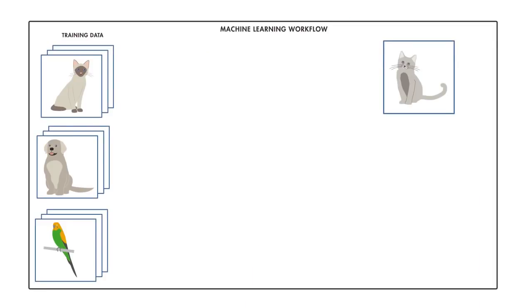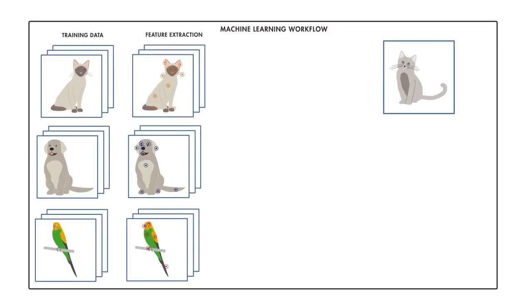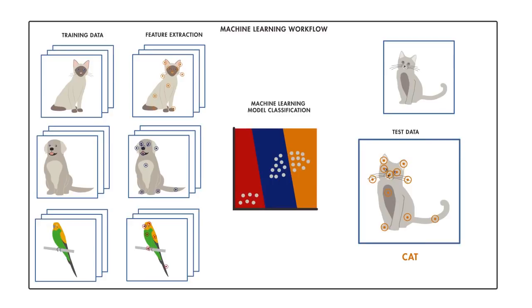To have a computer do classification using a standard machine learning approach, we'd manually select the relevant features of an image, such as edges or corners, in order to train the machine learning model. The model then references those features when analyzing and classifying new objects.